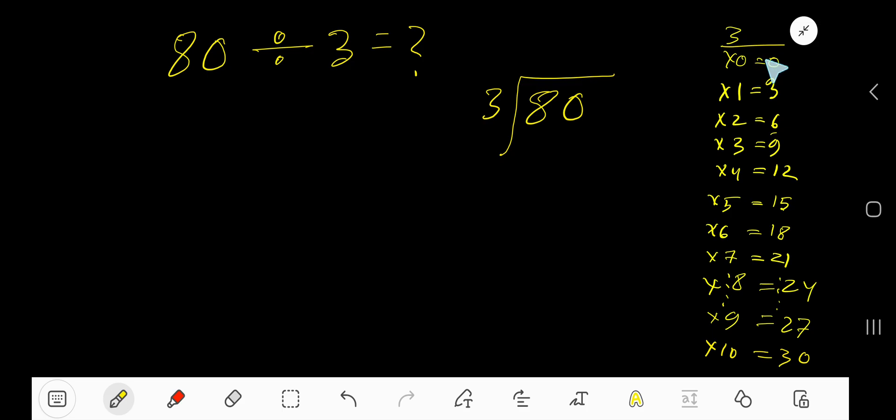To find out the multiplication table of 3, just add 3 with the previous step. 0 plus 3, 3. 3 plus 3, 6. 6 plus 3, 9.